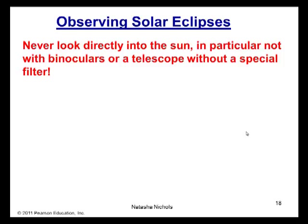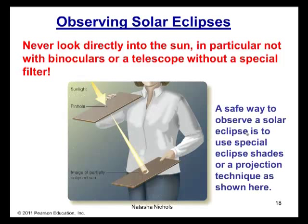Now observing solar eclipses, never ever look directly into the Sun, especially not with binoculars or a telescope. Unless, of course, the telescope has a special filter, or it is a solar telescope. Here is illustrated a safe way to observe a solar eclipse by using a projection technique, as shown right here. Or, of course, you can use the eclipse sunglasses.